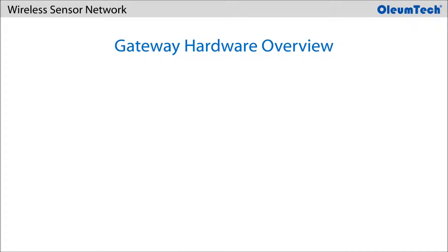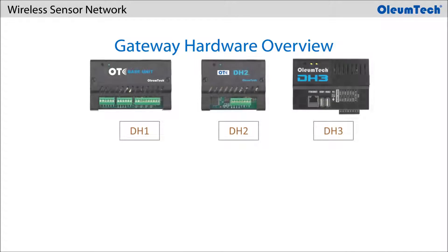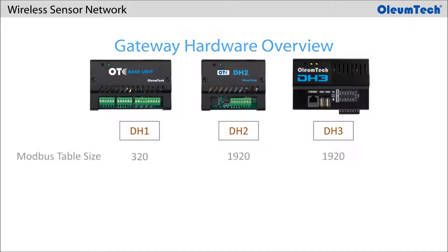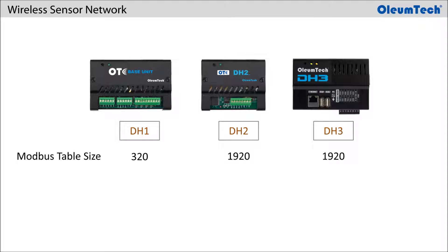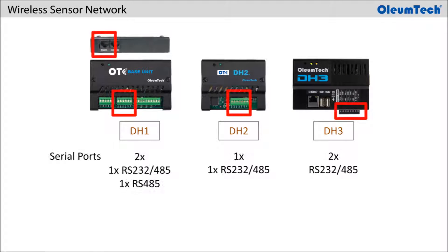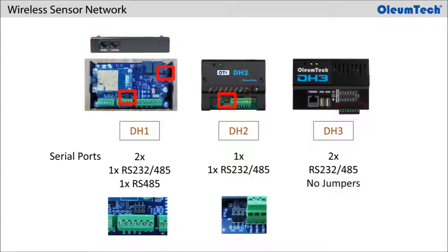Let's get more familiar with the OTC gateways by first going over the differences. The DH2 and DH3 have the larger Modbus holding register table size. The DH1 has two serial ports, the DH2 has one, and the DH3 has two serial ports that can be configured just with the Breeze software. The other two gateways require modifying the jumper settings.